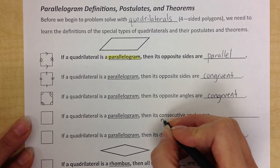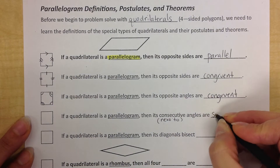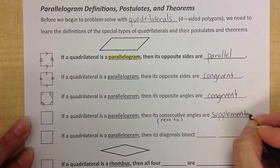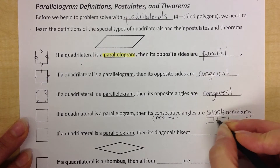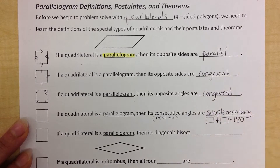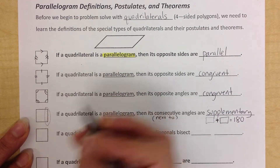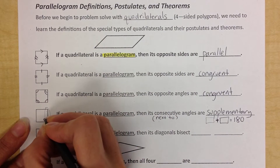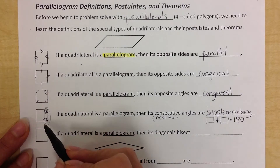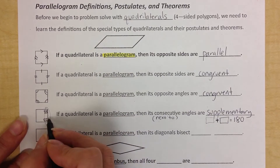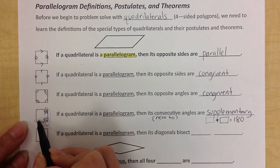Consecutive means next to. So if you know something's a parallelogram, you're going to know that consecutive angles are supplementary — supplementary means they add up to 180. So if you add the two consecutive angles, you get 180. In the picture, this angle right here and this angle, the ones next to each other, are one pair. For example, if this angle was 92, then 180 minus 92 is 88. Any pair of consecutive angles you pick will add up to 180.